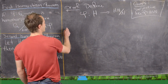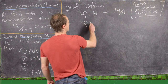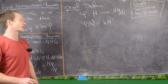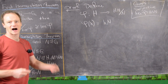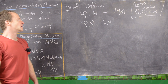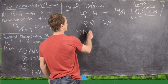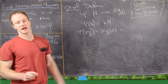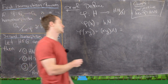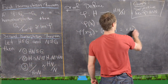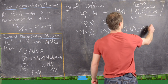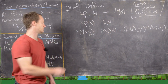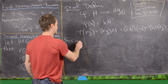Define φ(h) = hN (the coset). This is a homomorphism: φ(xy) = xyN = (xN)(yN) = φ(x)φ(y), since multiplication in the quotient group is defined exactly that way. So we have a homomorphism. The next thing to show is that it is surjective — that the image of φ equals all of HN mod N.